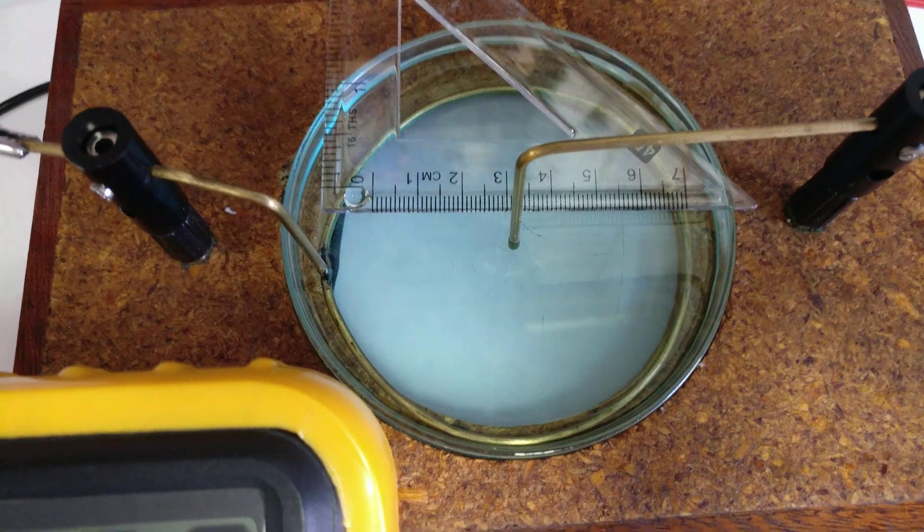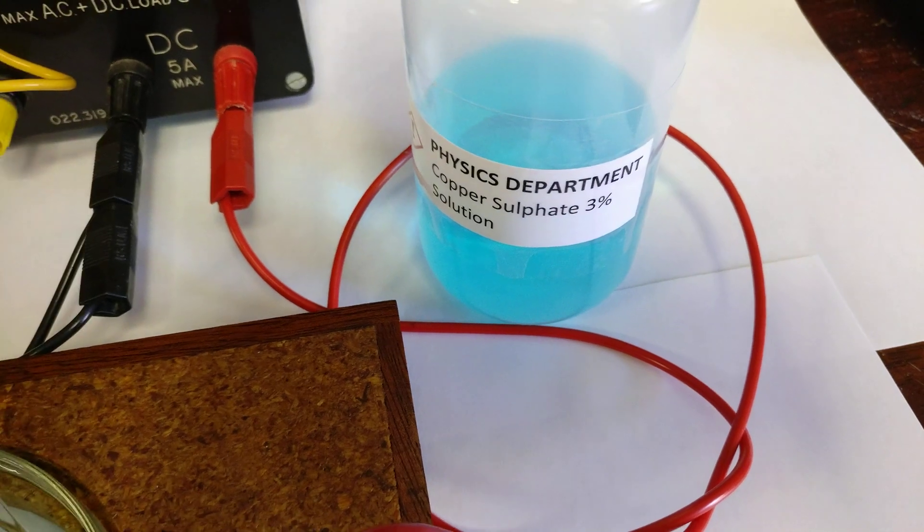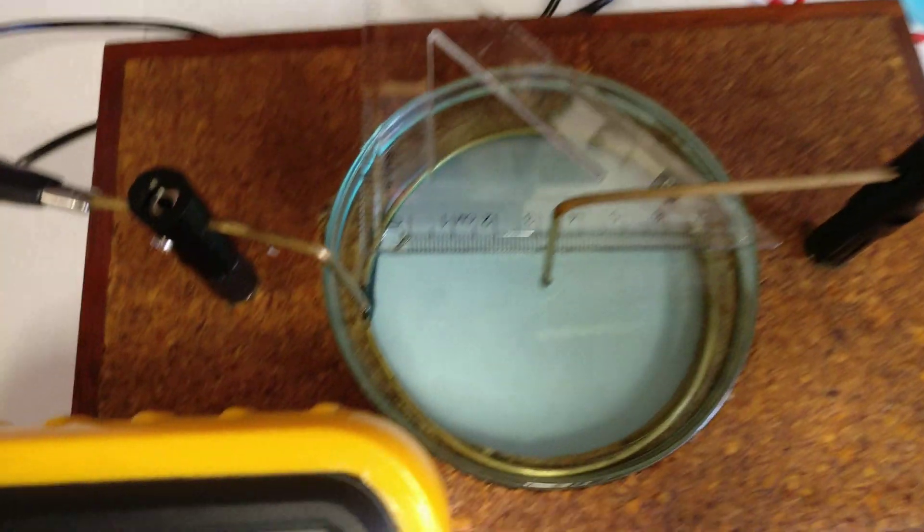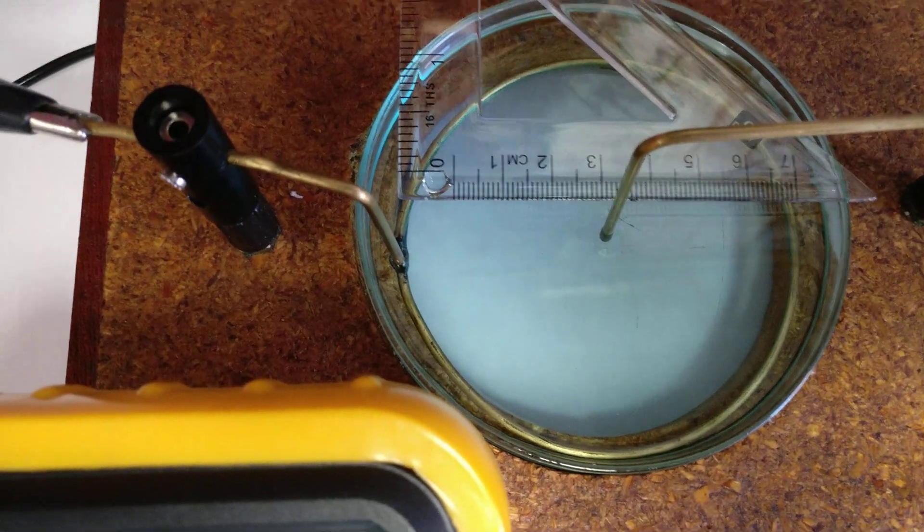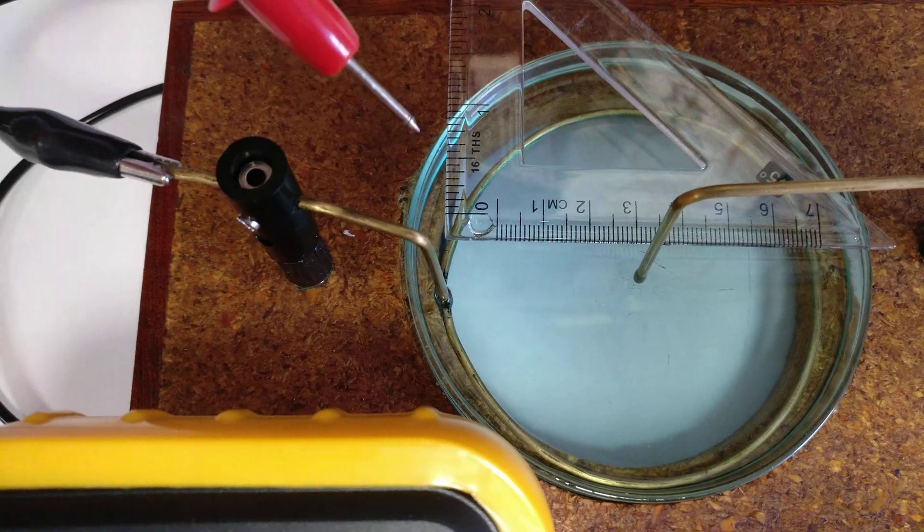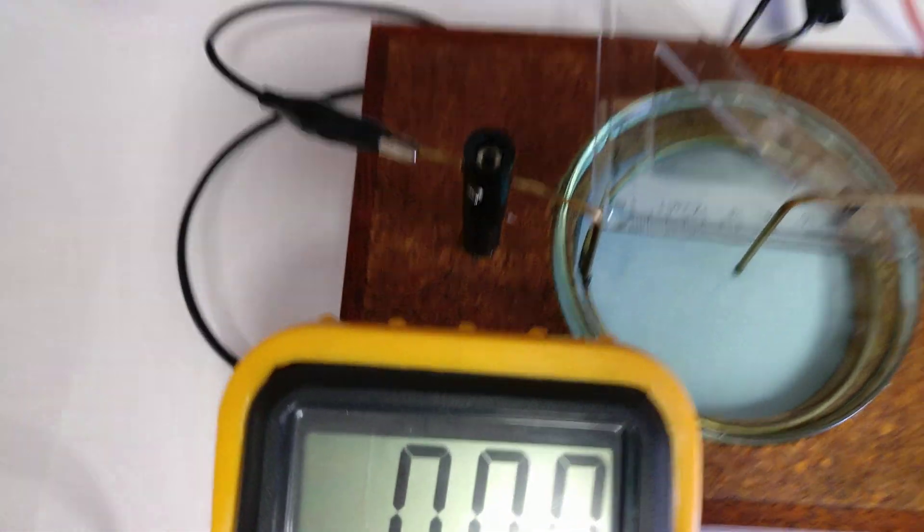This time though, we're looking at copper sulfate solution. It's a similar job. We've got a circular electrode that goes around and that's connected here to the power pack.